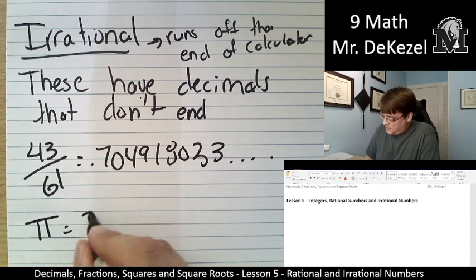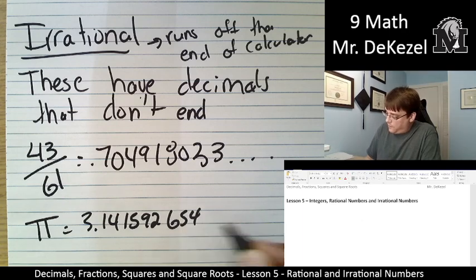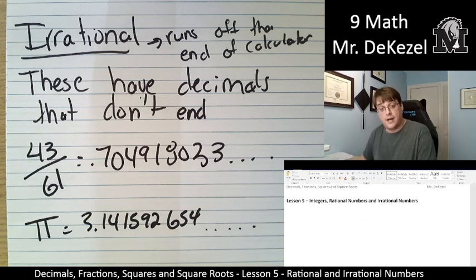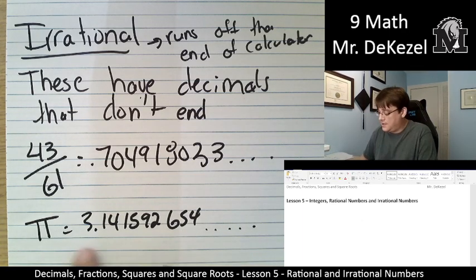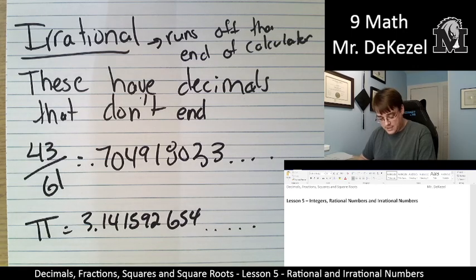Another example of an irrational number is pi. Pi is 3.141592654, and then it does continue. I just can't remember anymore. But this is a number that goes on for thousands and thousands of decimal places. And we have no idea what the end actually is. So pi is an irrational number.